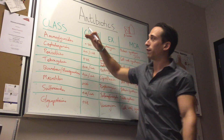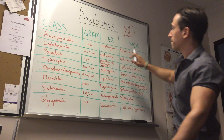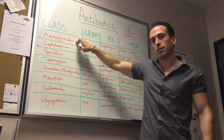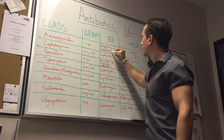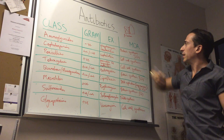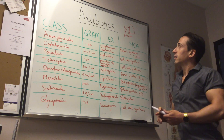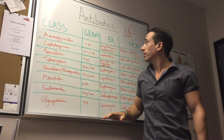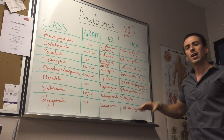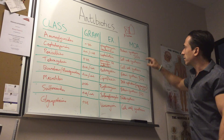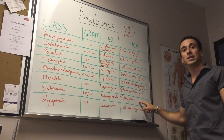One important antibiotic that doesn't fit neatly into the above classes is gentamicin, which has a very similar effect to aminoglycosides like streptomycin. Gentamicin inhibits bacterial protein synthesis by targeting the 30S ribosomal subunit. To summarize, the major mechanisms of action across antibiotic classes are: inhibition of protein synthesis, inhibition of cell wall synthesis, inhibition of DNA replication, and inhibition of folate metabolism.